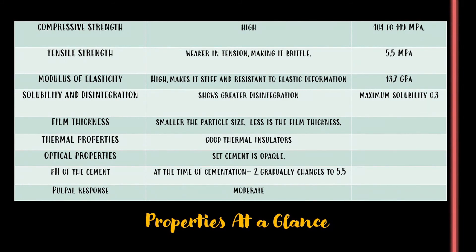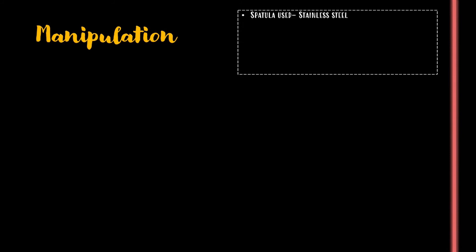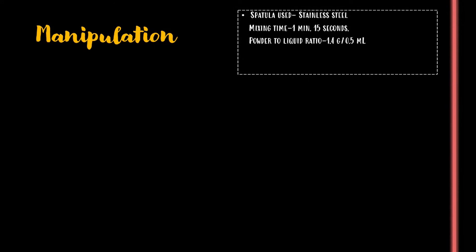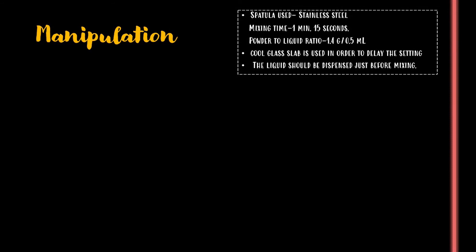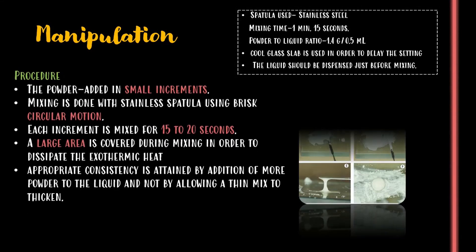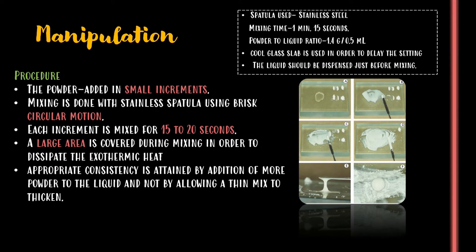The pulpal response is considered moderate. For manipulation of zinc phosphate cement, a stainless steel spatula is used and the mixing time is up to 1 minute 15 seconds. The powder to liquid ratio is 1.4 grams to 0.5 ml of liquid. A cool glass slab is used to delay the setting time, and the liquid should be dispensed just before mixing.